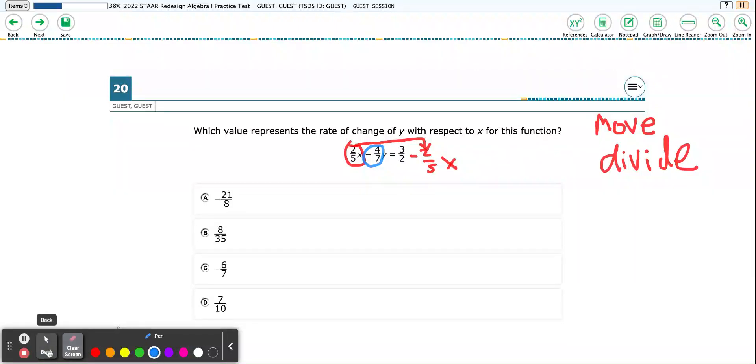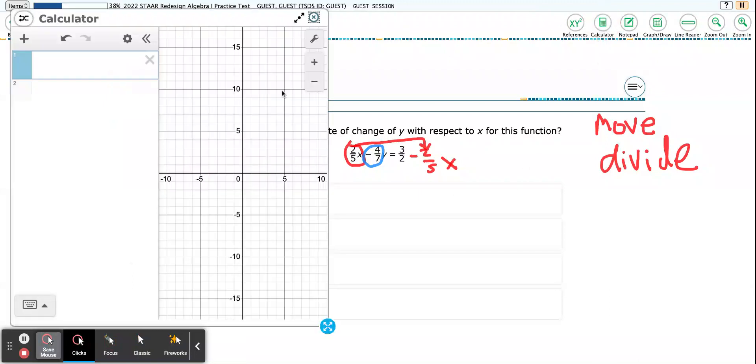Let me show you how to do that. I'm going to open my calculator. Let's see what Desmos can help us with. So I'm going to go ahead and put in what I see. Before I divide, I've got negative 4 divided by 7y equals 3 over 2 minus my 2 divided by 5x.